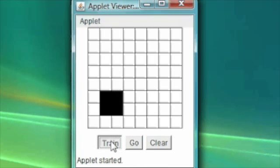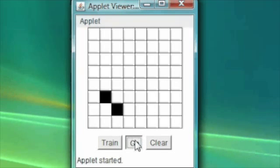The neural network is now trained for both patterns. If we click go, you notice it recognized that pattern. Even with two of them away, it can recognize the pattern.